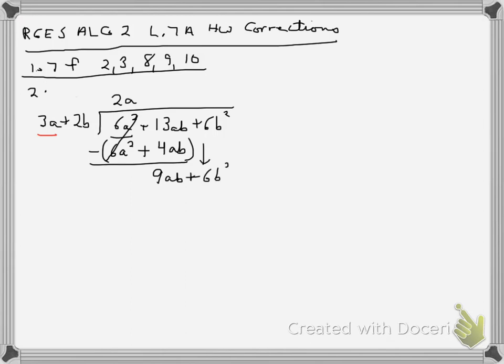This should look just like long division. Now I'm asking myself, what do I multiply 3a by to get 9ab? The answer is 3b. When I multiply back, I get 9ab for the first term plus 6b squared for the second term, subtracting, and I get 0. So this is my answer.